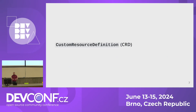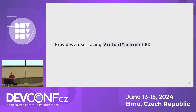In terms of how KubeVirt implements this at the API level, we use custom resource definitions to extend the Kubernetes API. The first and most important is the virtual machine CRD — our user-facing CRD. It allows the user to define a virtual machine that persists. It's our initial touchpoint with users and the most feature-rich CRD we provide. You can do various operations through it — advanced operations around migration, hot plug, and so on — all orchestrated through the virtual machine object.